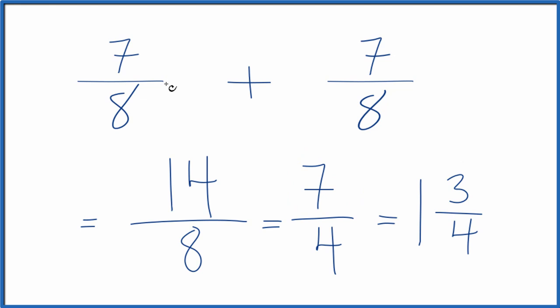So either way, when you add the fractions 7 eighths plus 7 eighths, you end up with 14 eighths, which you could simplify to 7 fourths. And if you wanted to have that as a mixed number, you could have 1 and 3 fourths.